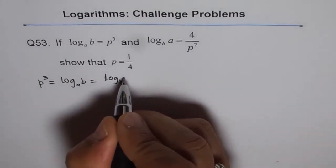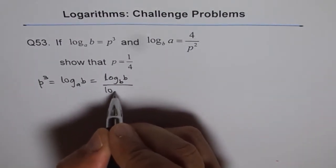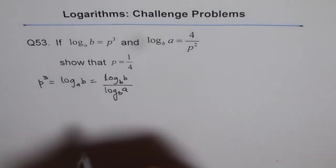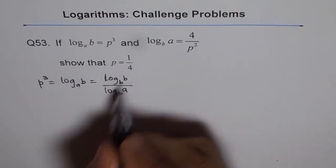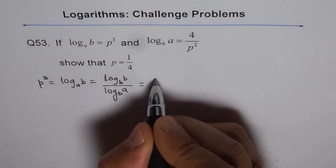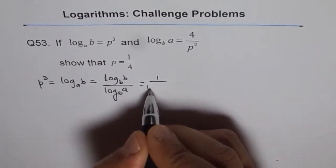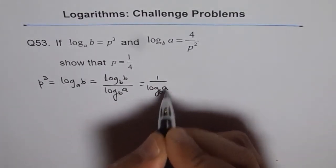So then we say log B of B divided by log B of A. Now what is log B of B? Log B of B is 1, so it is 1 over log B of A.